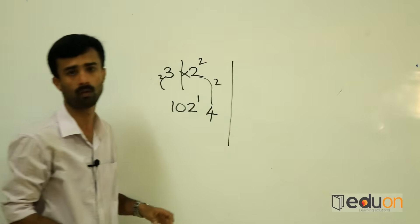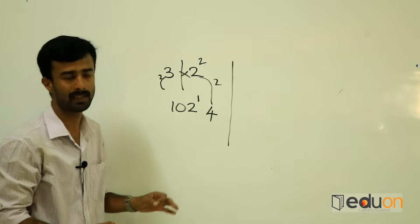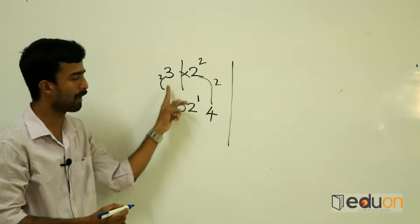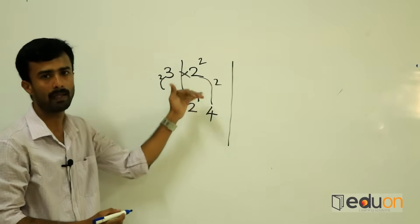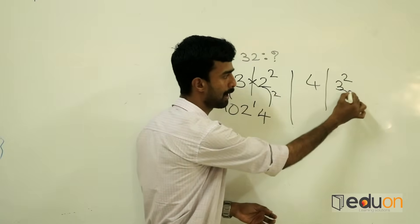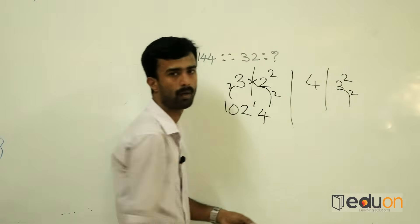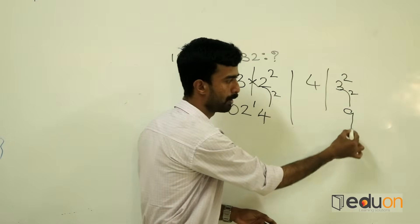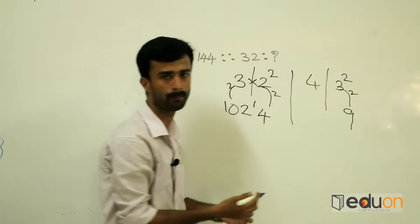Next: the remainder is carried forward. 2 squared is 4. Multiply and double. 3 squared is 9. Remainder is zero. Now we will multiply.